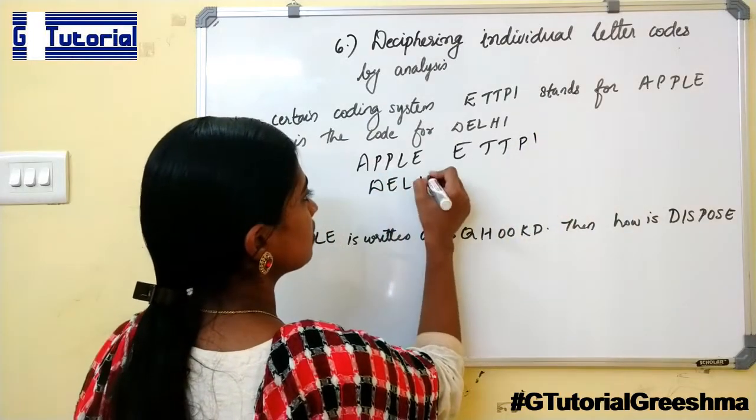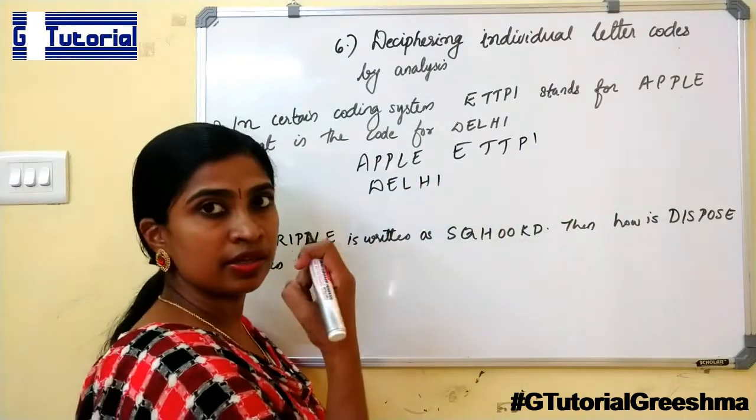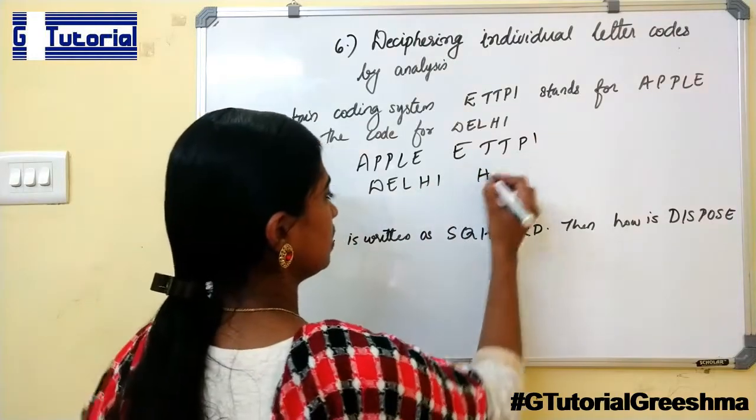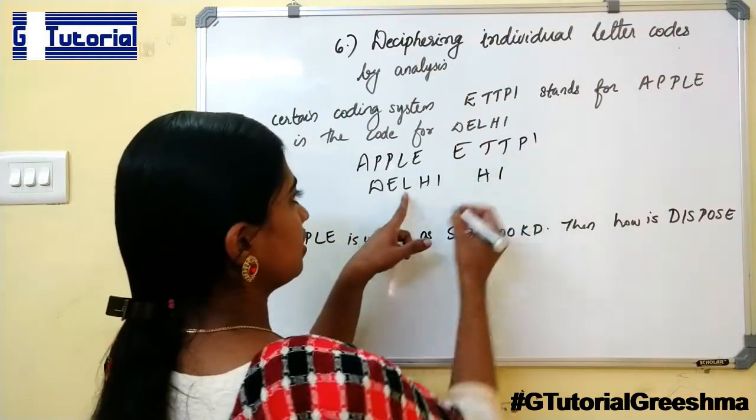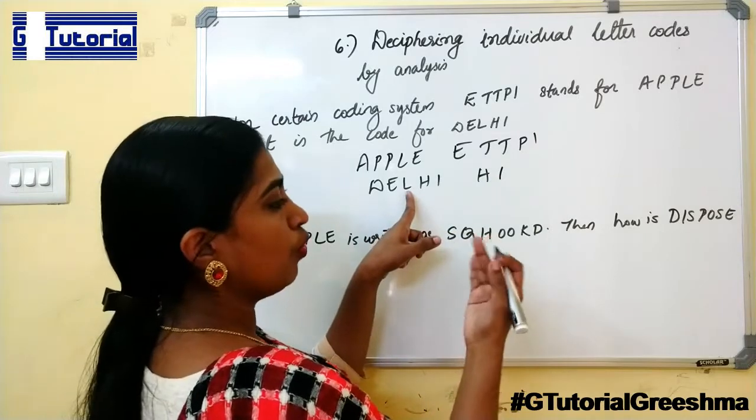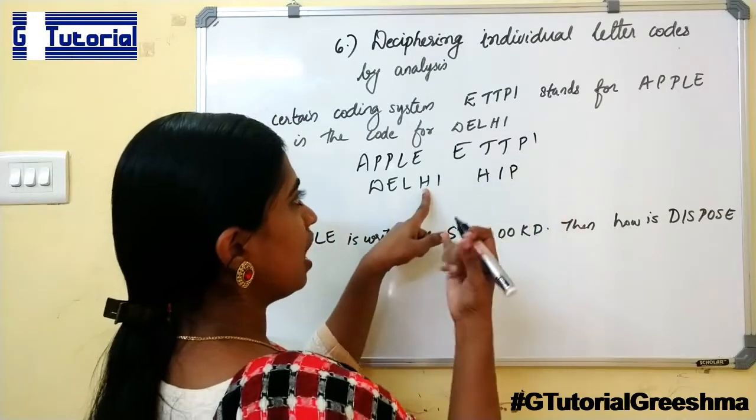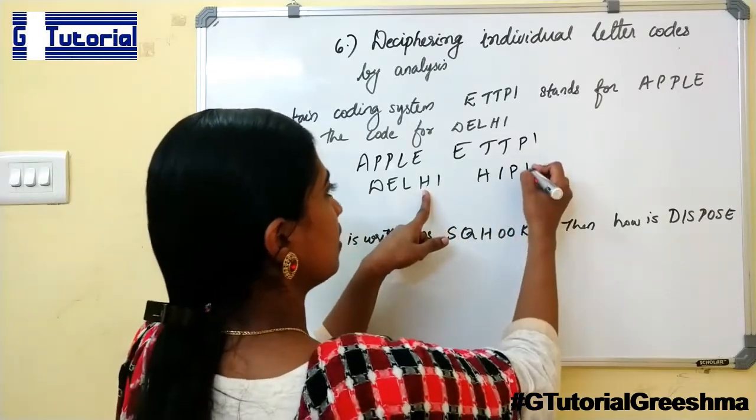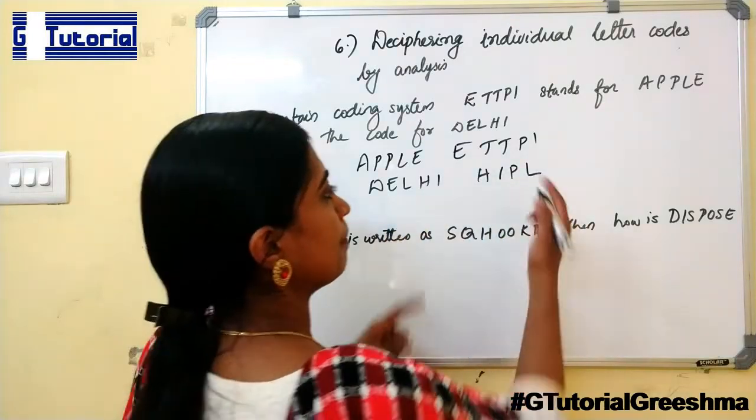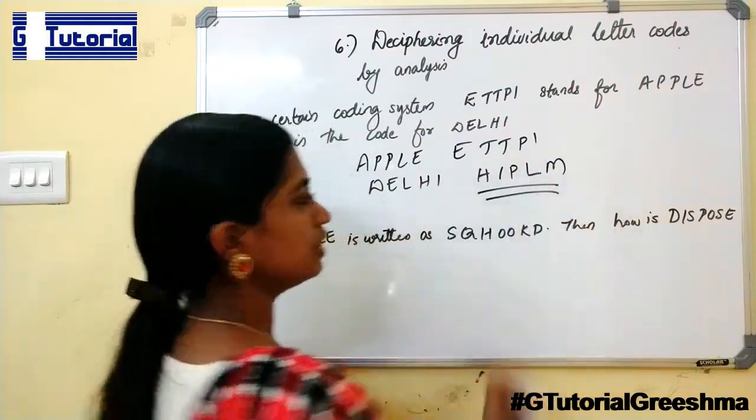Similarly, daily is coded as D, E, F, G, H. A becomes E, I. L becomes M, N, O, P. I becomes J, K, L, M. Y becomes... so this is the answer for daily.